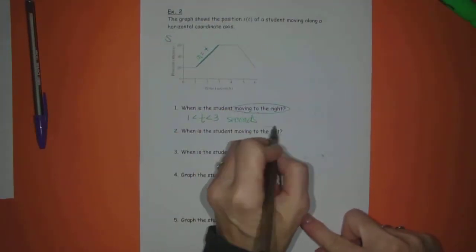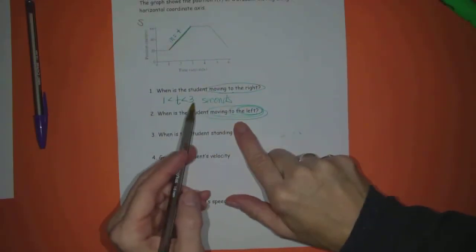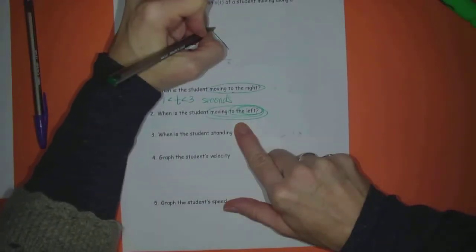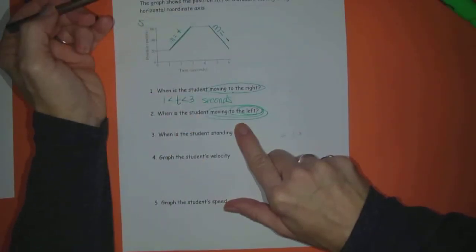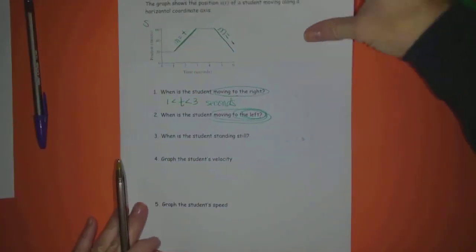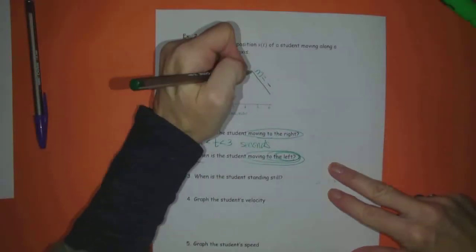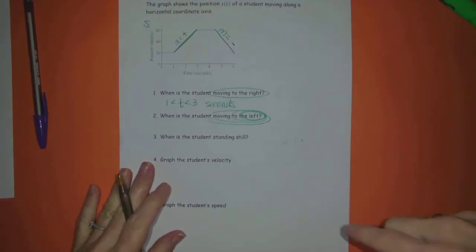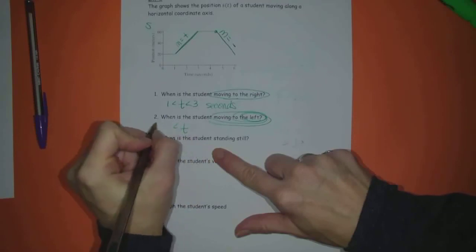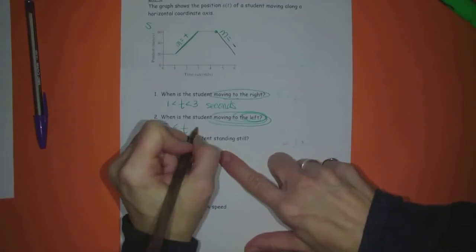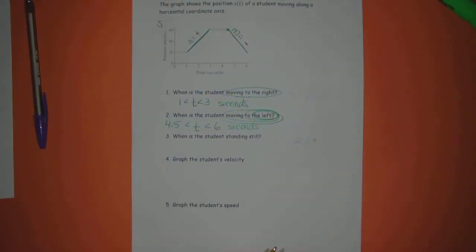When is the student moving left? Moving left. Well, the exact opposite of moving right. So I'm looking for where the slopes of the tangent lines are negative. So that's going to be from, you know what? Don't you love when Callahan does this? Is that supposed, I guess that is supposed to be like 4.5. That just dawned on me. Yeah, this guy right here looks like it's 4.5. So I'm going to say for t between 4.5 seconds and 6 seconds. That's when we're moving left.